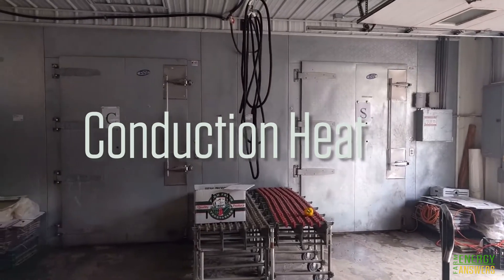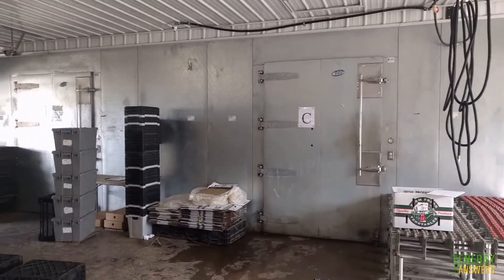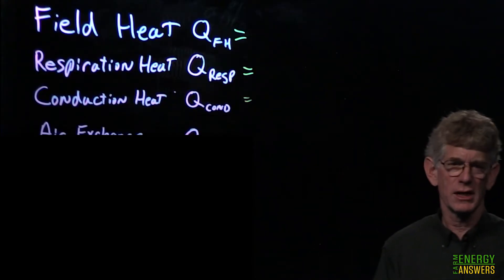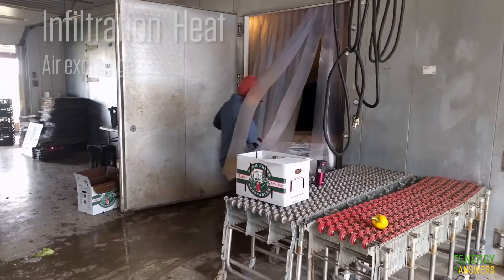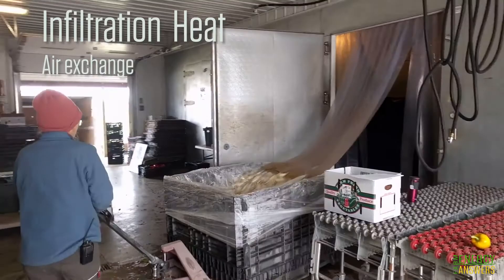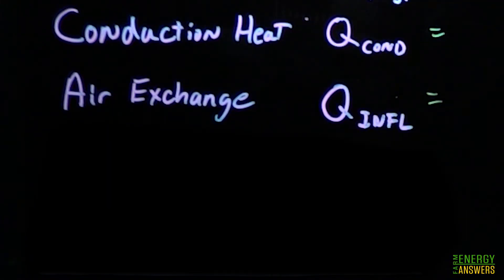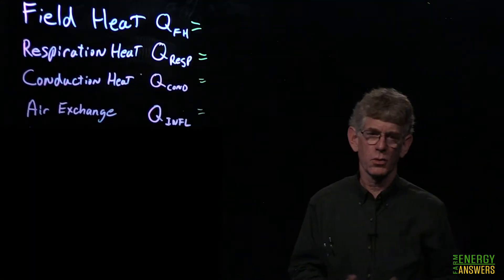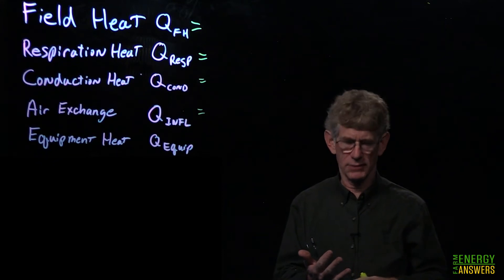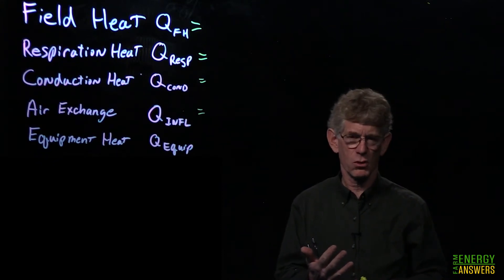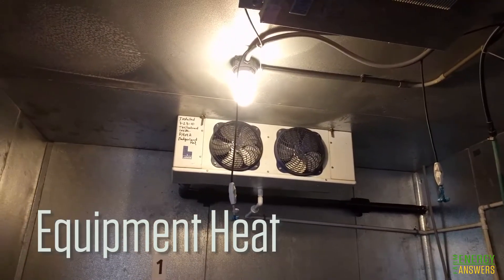Next is conduction heat — we have a box we're keeping at a certain temperature, so we have to add refrigeration to maintain that. Next is air exchange: every time we open the door to put produce in or pull it out, we lose cold air that's replaced by warm air we have to cool — we call that infiltration heat or air exchange. Next is equipment inside the cooler: we have fans to move air across the refrigerating coils, and we also likely have lights and possibly a fork truck.